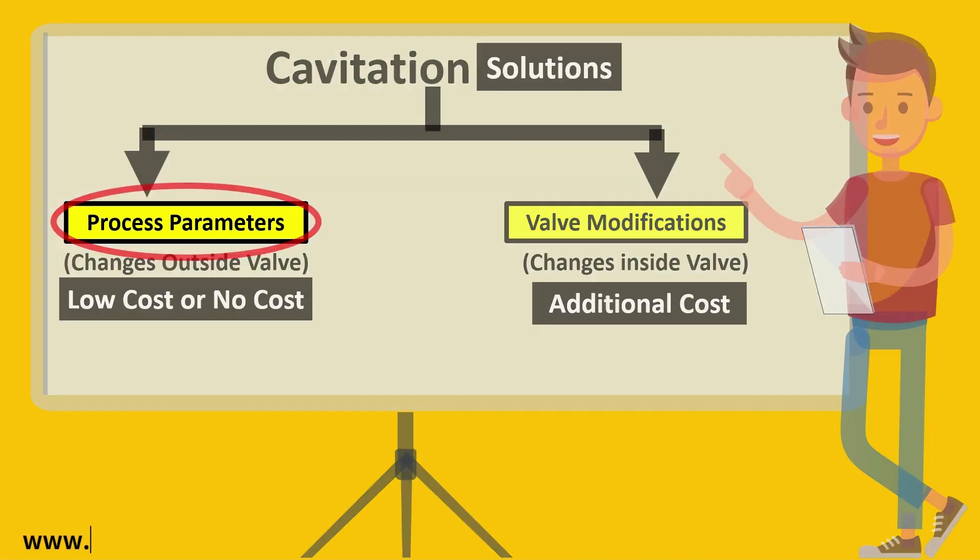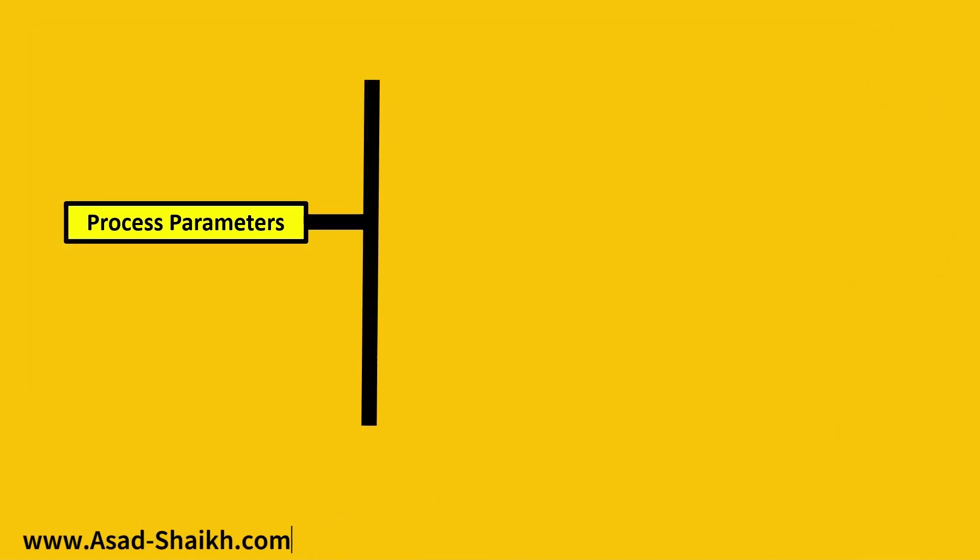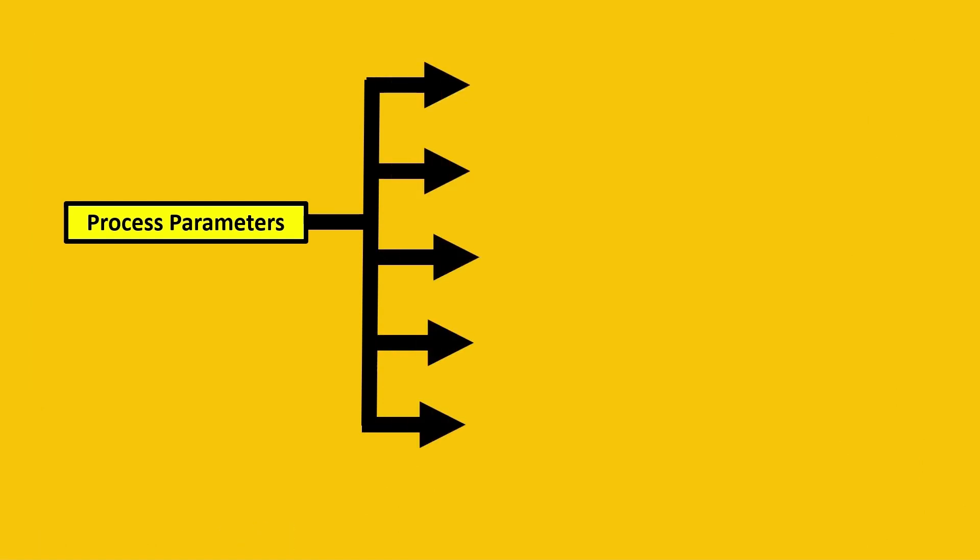Let's look at the process parameters part. Process parameters can be divided into five solutions, but you can remember this with a very simple acronym which is ERROR. The first E here stands for elevate the pressure P1 and P2.